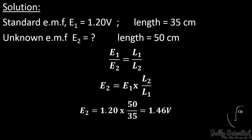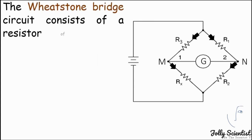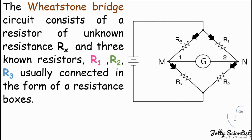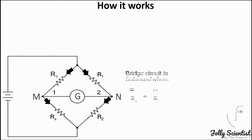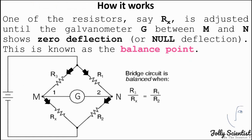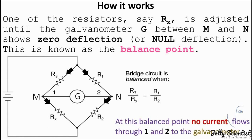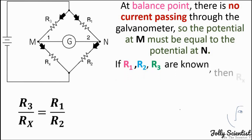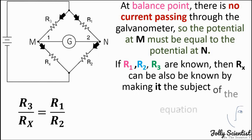The Wheatstone bridge circuit consists of a resistor of unknown resistance Rx and three known resistors R1, R2, and R3, usually connected as resistance boxes. One of the resistors — say Rx — is adjusted until the galvanometer G between M and N shows zero (null) deflection. This is known as the balance point. At balance, no current flows through the galvanometer, and the potential at M equals the potential at N.